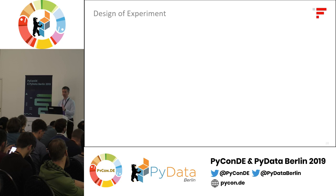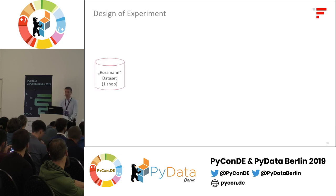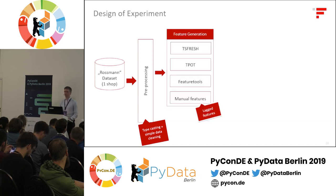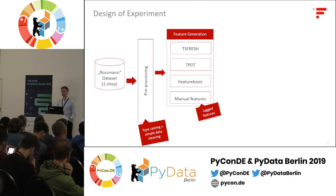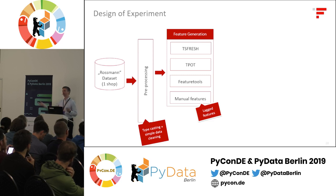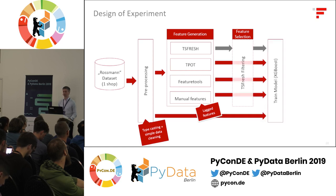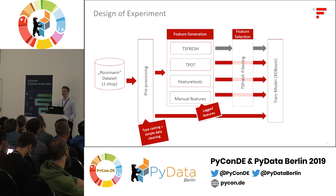The Rossmann dataset for one store was preprocessed — just cleaned with some typecasting, simple things. Then feature generation was applied with each of the three libraries, plus one control of just manually lagged features. Additionally, for TSFresh features, we also used the built-in feature selection. All of these datasets were passed to XGBoost separately for training. As a second control, we also used no engineered features at all — just the base features — to see how that compares.